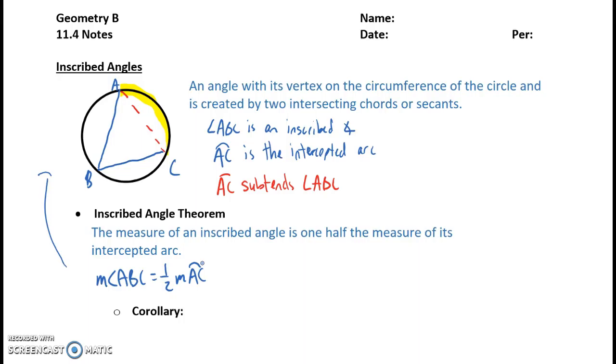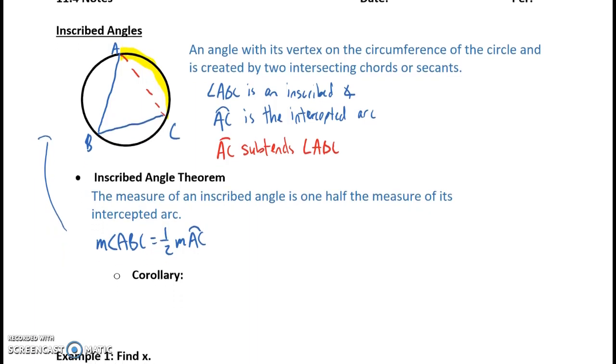Now, a corollary that relates to this says that if inscribed angles intercept the same arc, then they are congruent. And that, again, just makes sense because we'd have the exact same arc. So let's scroll down and jot that down.